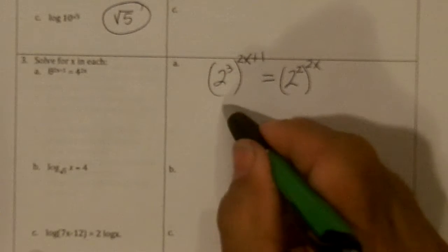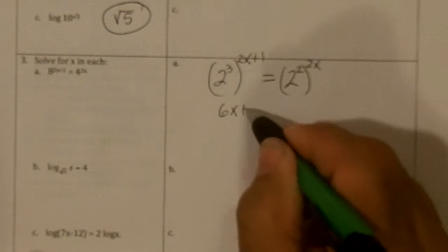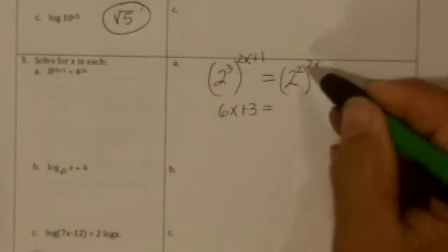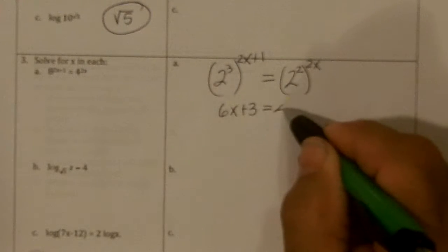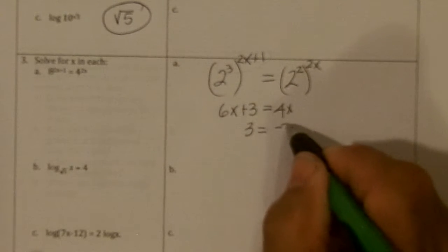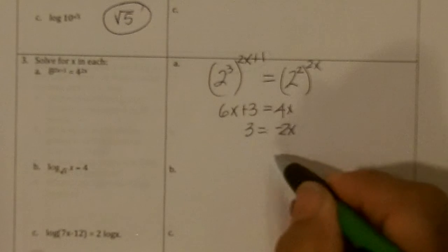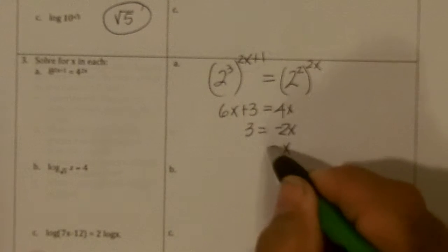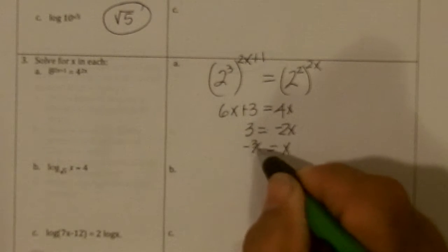So we get 6x plus 3 equals 2 times 2x is 4x. If I subtract 6x, I get 3 equals negative 2x. Divide by negative 2, and we get x equals negative 3 halves.